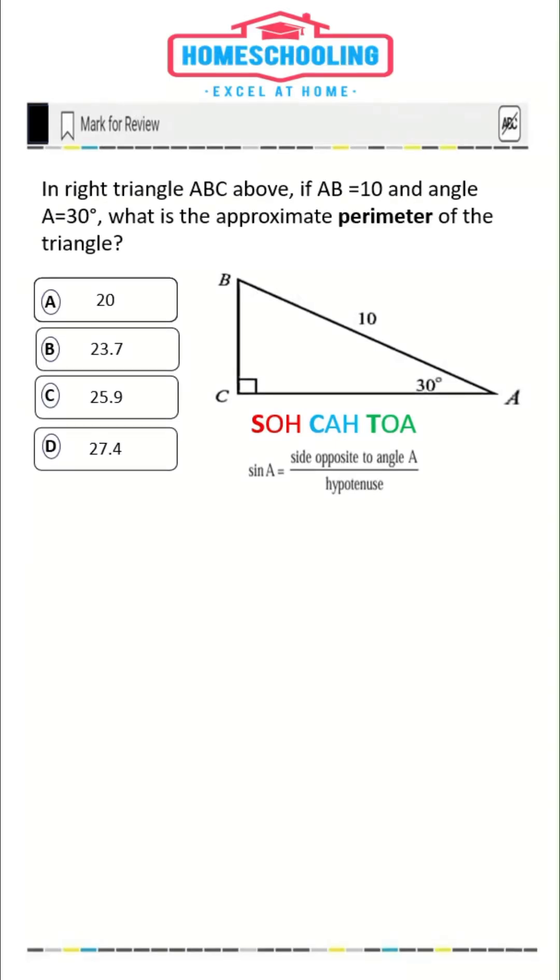This is one of the easiest trigonometry SAT math problems. We have a right triangle here in which angle A is 30 degrees and the length of hypotenuse AB is 10. We have to find the approximate perimeter of the triangle.